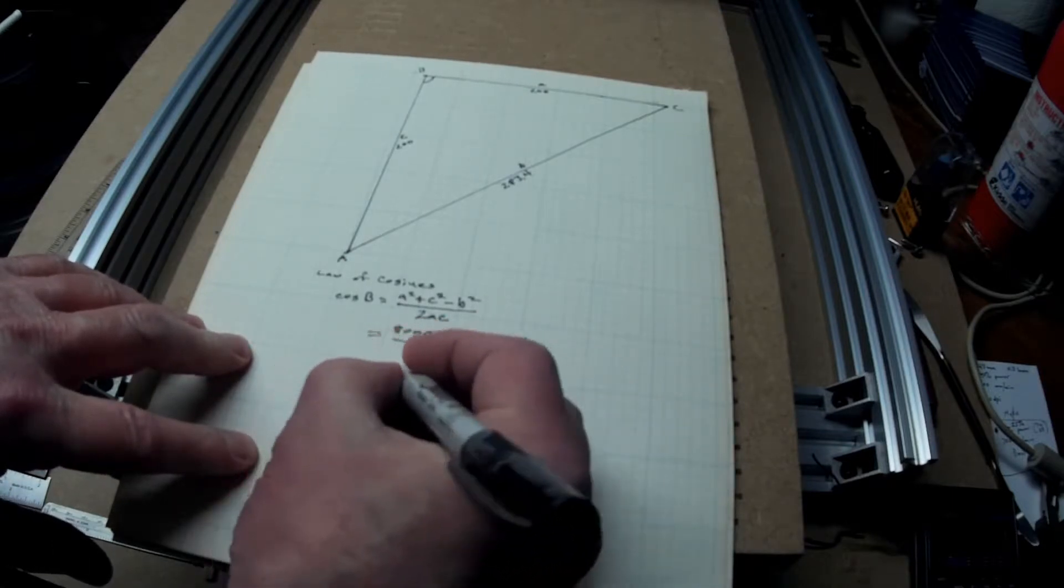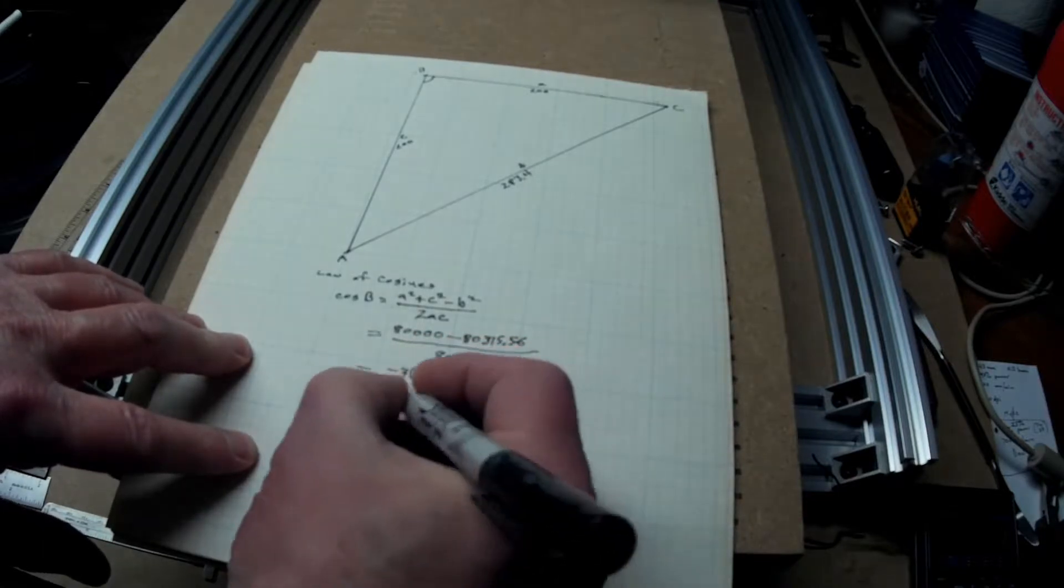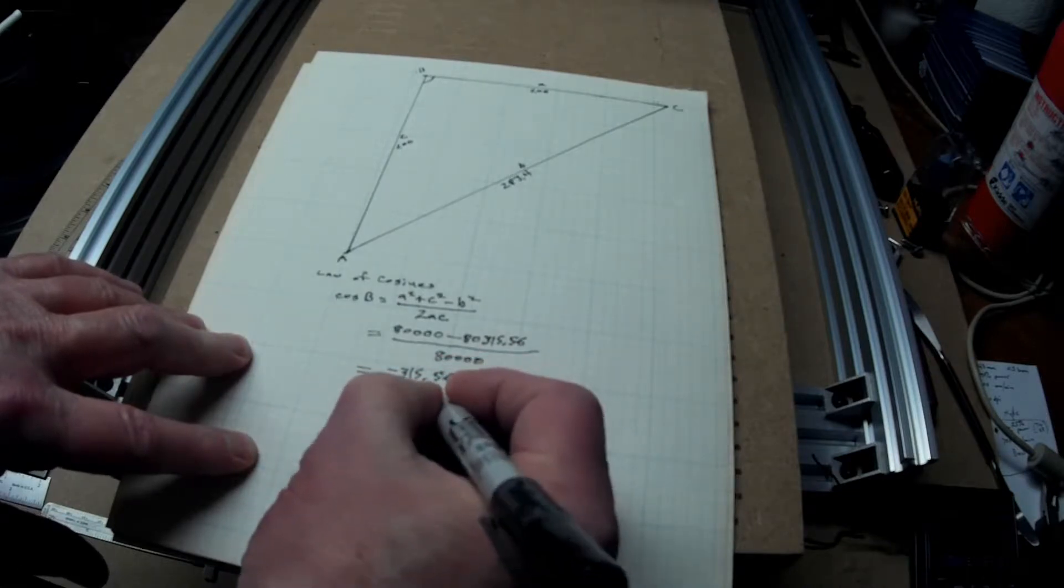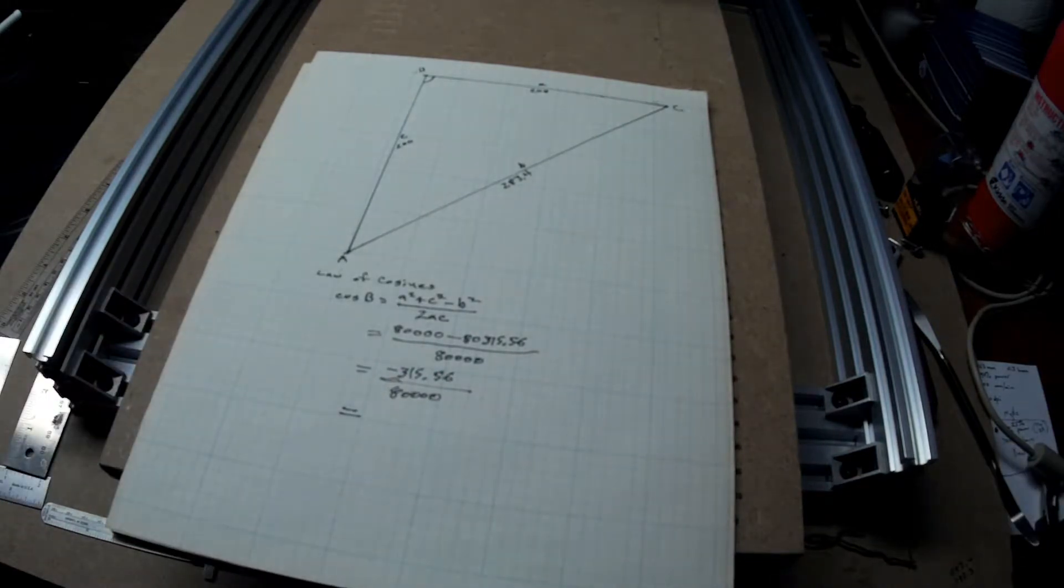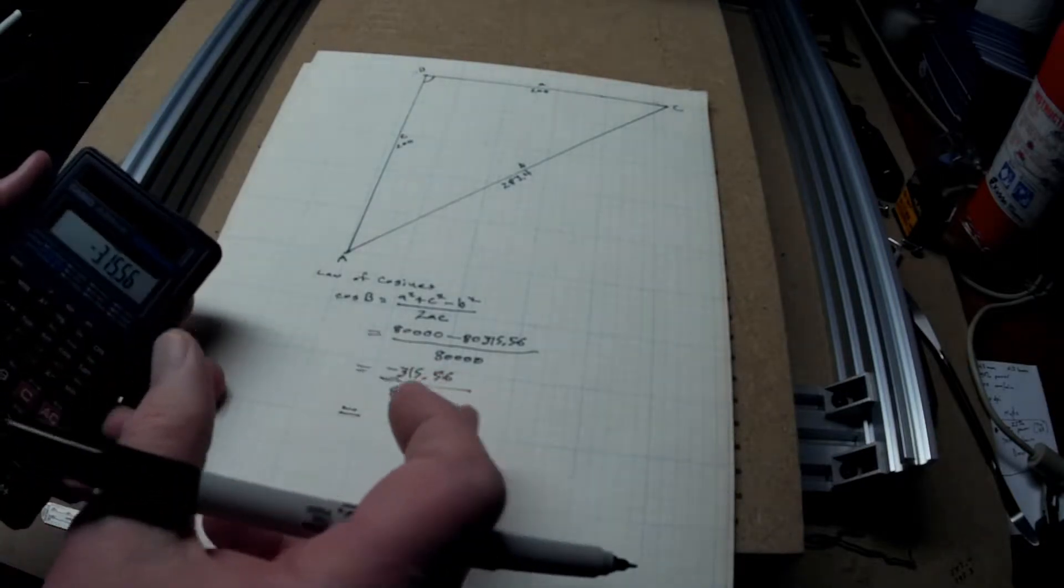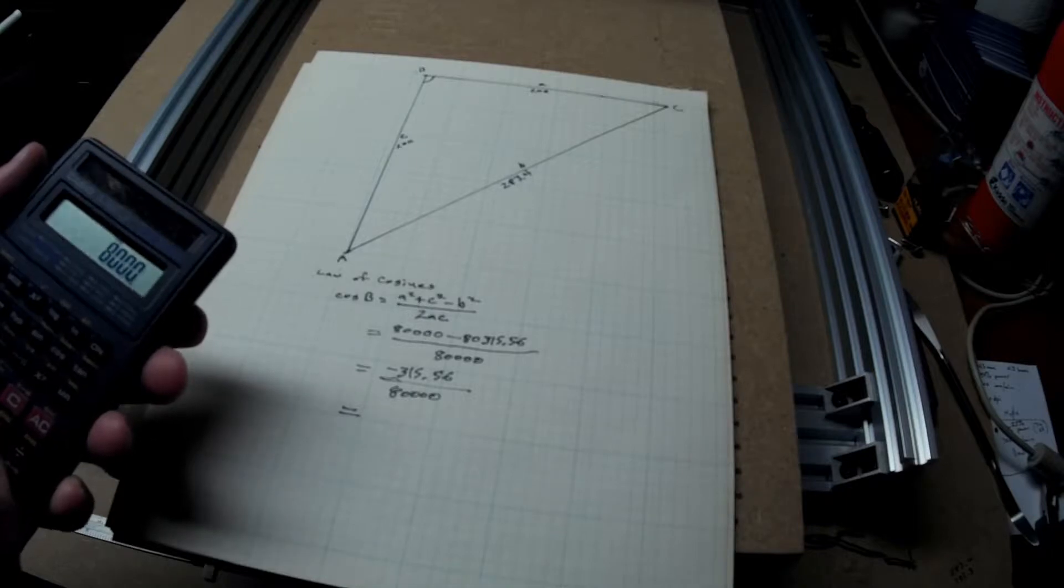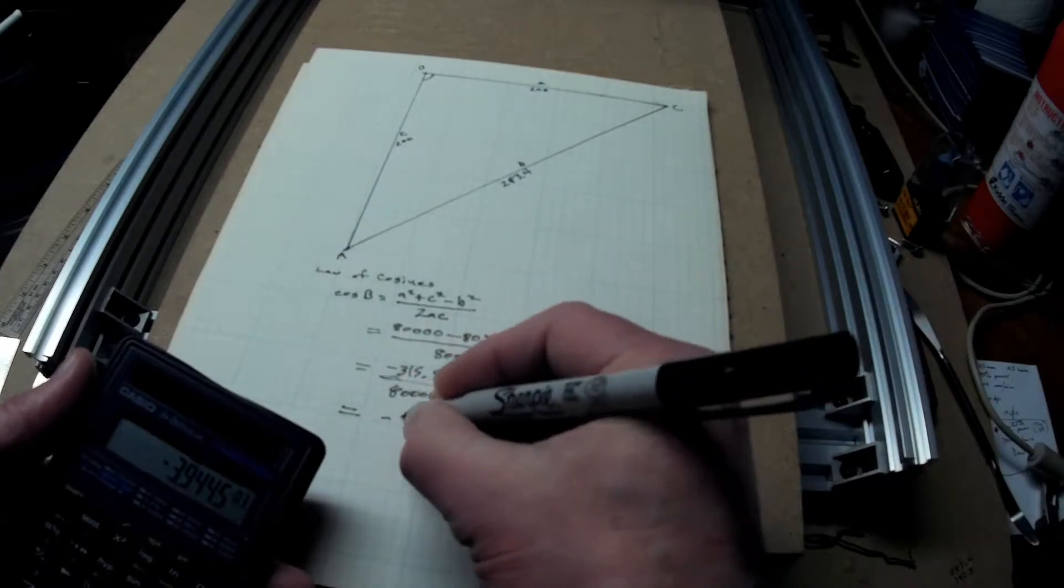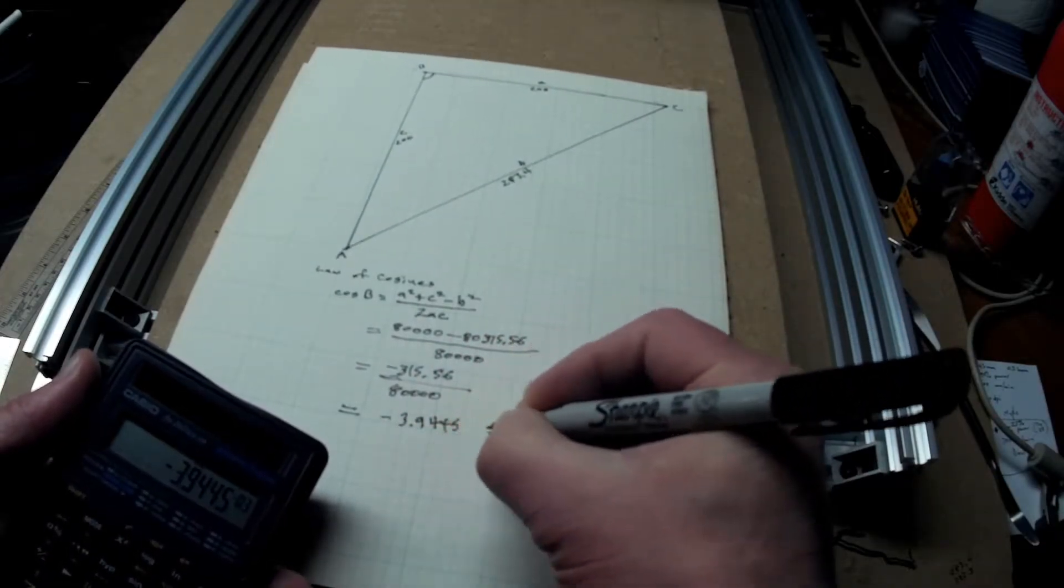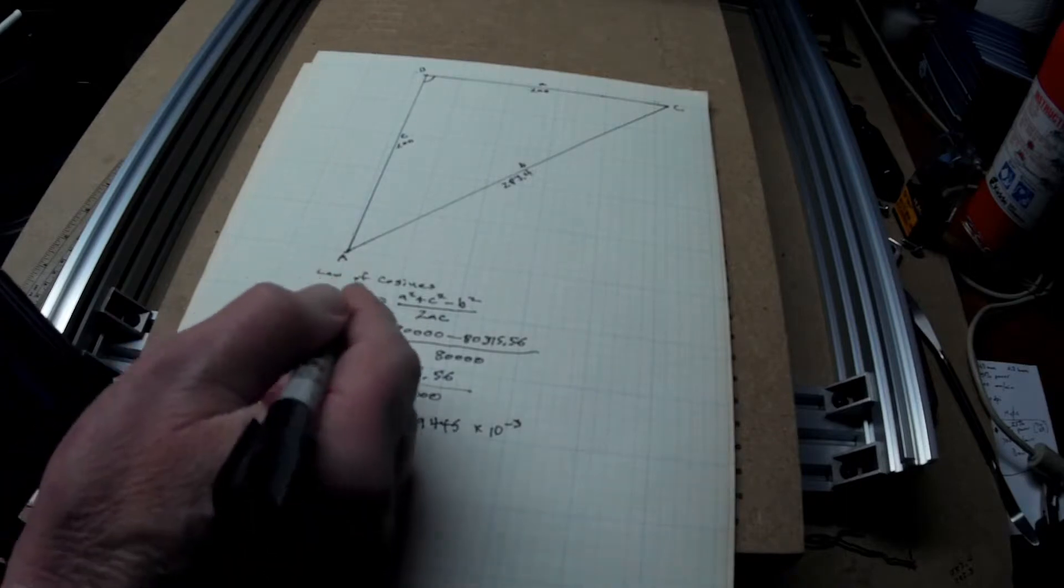So what we have is negative 315.56 divided by 80,000. And, by the way, when you use your calculator, we want this in degrees, so make sure your calculator is set in degrees, not radians. So, I've got negative 315.56 divided by 80,000. And that's going to give me, in scientific notation, negative 3.9445 times 10 to the minus 3. But, don't worry about that, just leave that in your calculator. Now, that's cosine B.